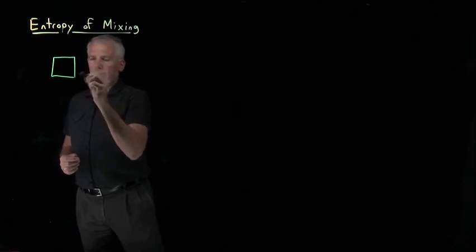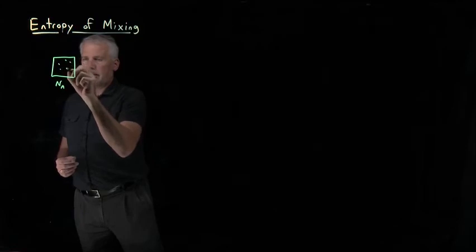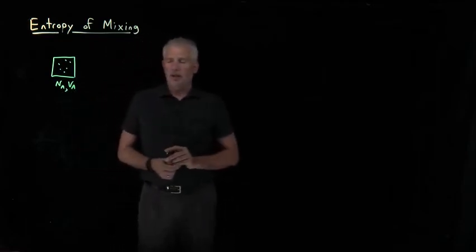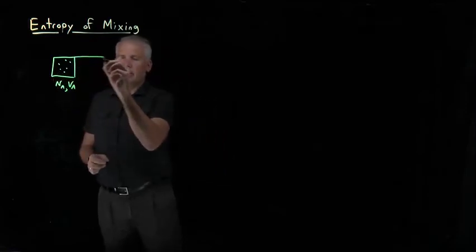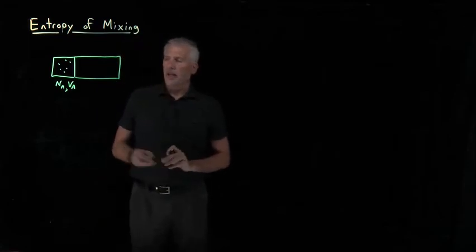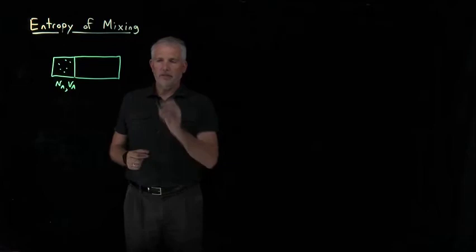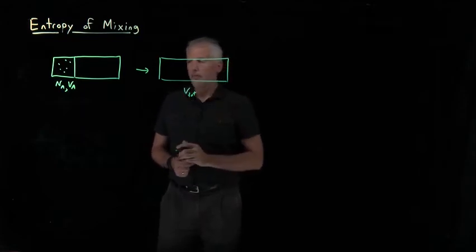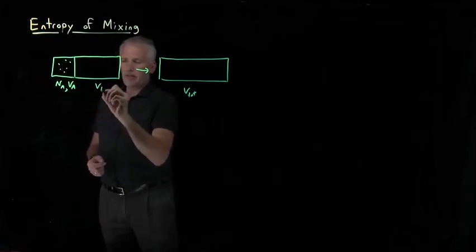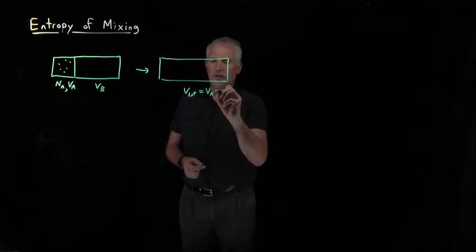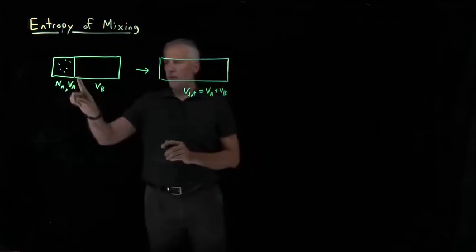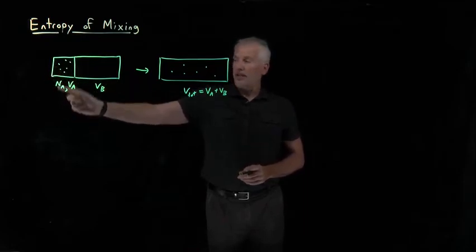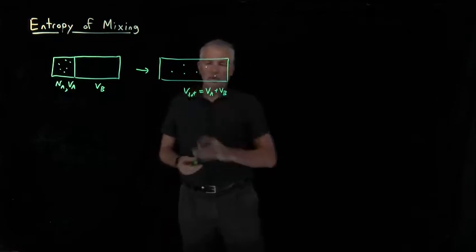Let's say we have some number of moles of gas A — N sub A molecules — occupying some volume V_A. Instead of considering mixing first, let's just let that gas expand. There's a bigger container, and I'm going to remove the wall between the left and right halves. The left half has volume V_A, the right half has volume V_B, so the total volume is V_A plus V_B. After removing the partition, the N sub A molecules of gas A expand to fill the larger total volume.